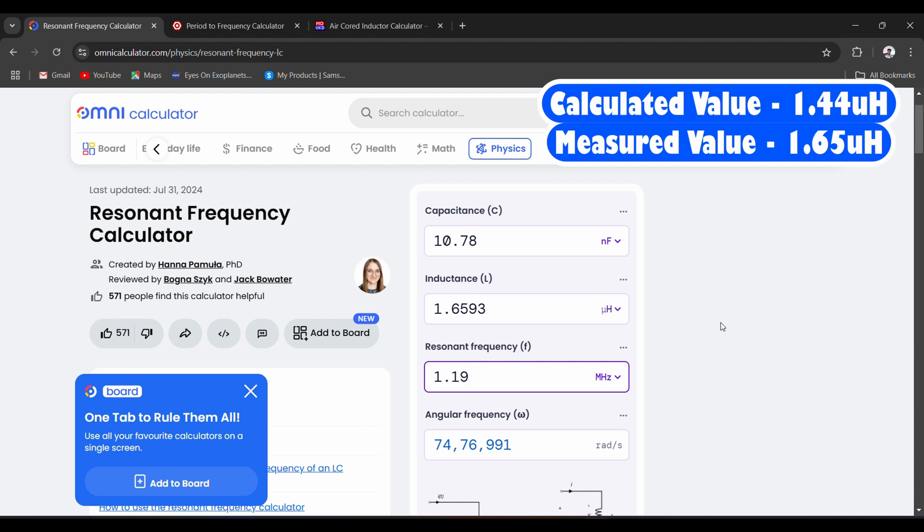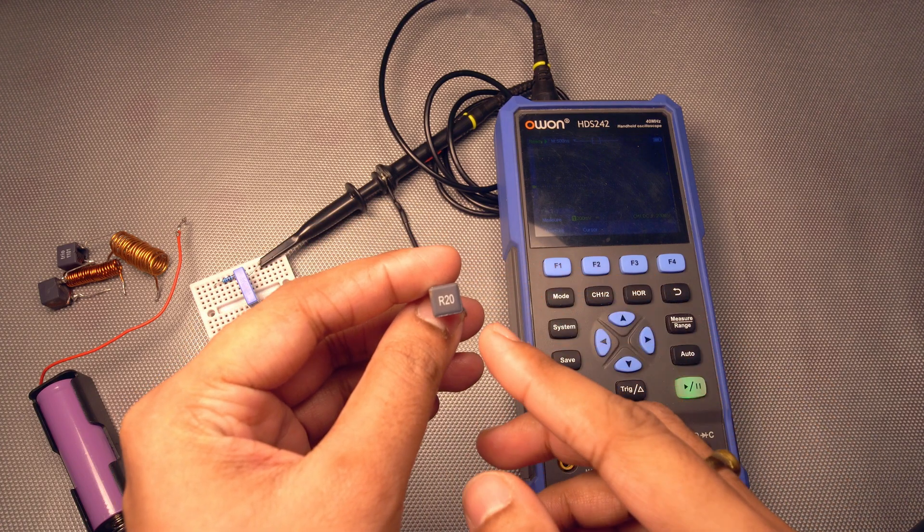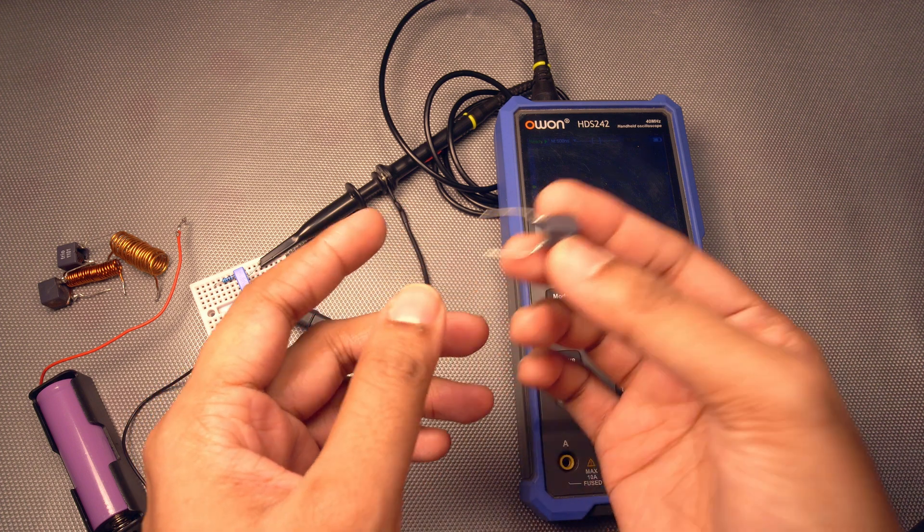That is the smallest value inductor that I have, 0.2 microhenry. So that's our inductor of R20 code, and this means 0.2 microhenry. Let us test.